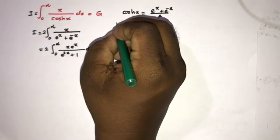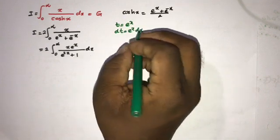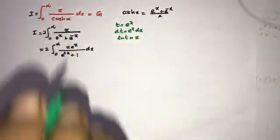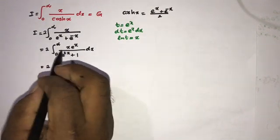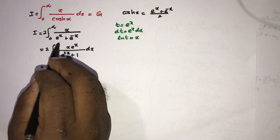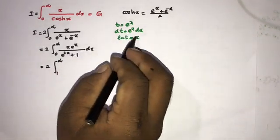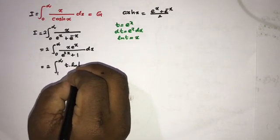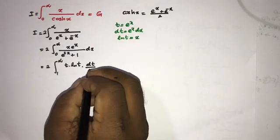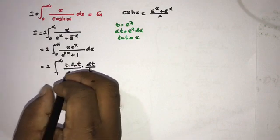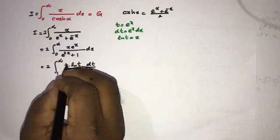Next we take the substitution t equals e to the x, so dt equals e to the x dx, and natural log of t equals x. Substituting in, the lower limit 0 becomes 1 and the upper limit stays infinity. We get x times e to the x equal to t times natural log of t, dx equals dt over t, and e to the 2x plus 1 becomes t squared plus 1. The t's cancel.